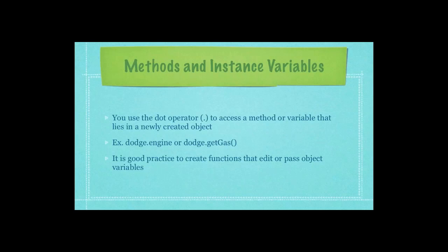So, how do you access those variables or methods within your class? You would just simply use the dot operator. As you can see here in this example, I'm able to access the variable engine by putting the dot operator between the word engine and the class name dodge. And then I also am able to access the function get gas of object type dodge by putting the same dot operator in there.